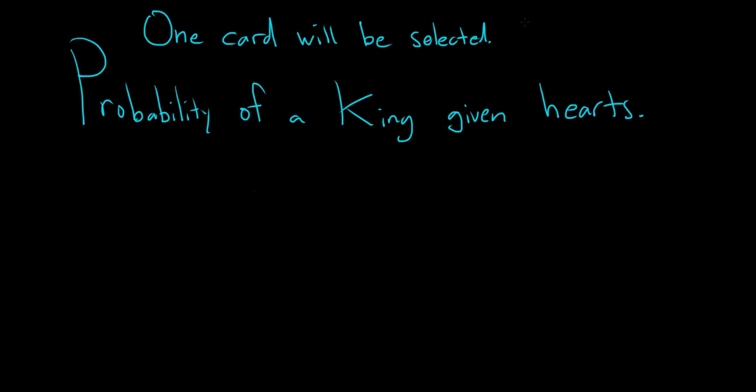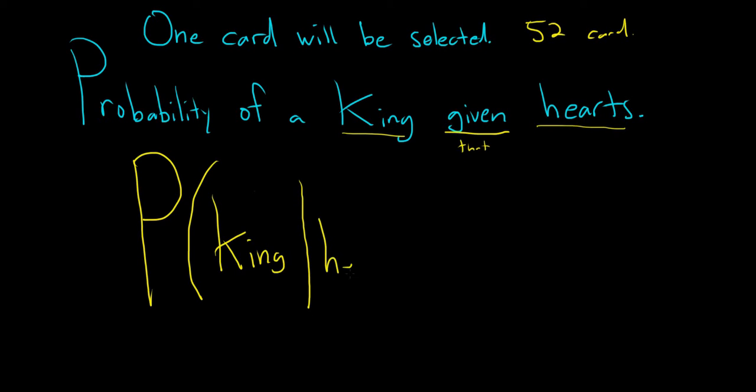One card will be selected from a 52-card deck, and we want the probability of selecting a king given that we know it's a hearts card. So the way to write this down would be big P, parenthesis, and then we want the probability of a king given, or often said given that, which you represent by drawing a line, that it's a hearts card.